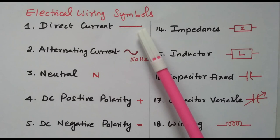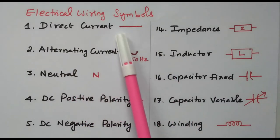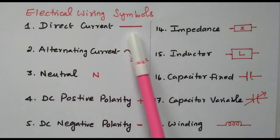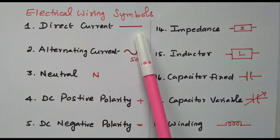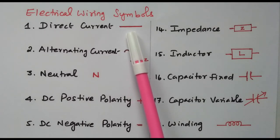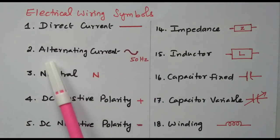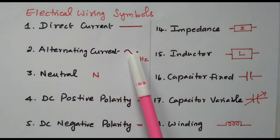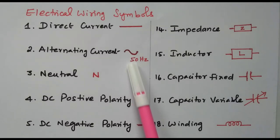Now we will go to the symbols. The first one is direct current, represented by a line, because direct current has a magnitude that is always independent of time — it always has the same magnitude. Then alternating current is represented like a sine wave; normally we use 50 Hz AC supply, so it is given as 50 Hz.